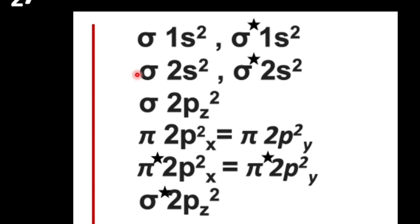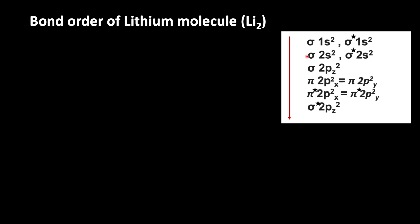Using this, let us write the electronic configuration of lithium molecule. Since lithium contains 6 electrons, we can write the electronic configuration: sigma 1s2, then electrons enter into sigma star 1s orbital: sigma star 1s2, then sigma 2s2.